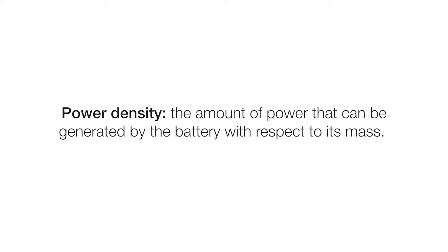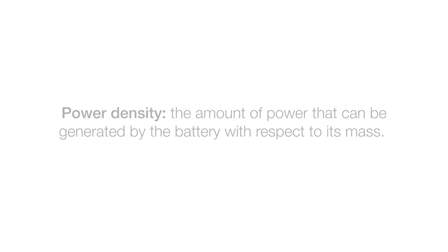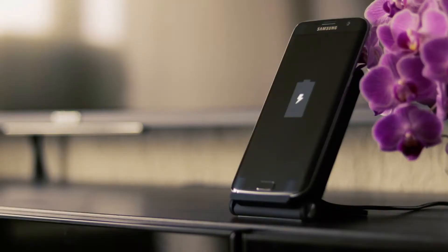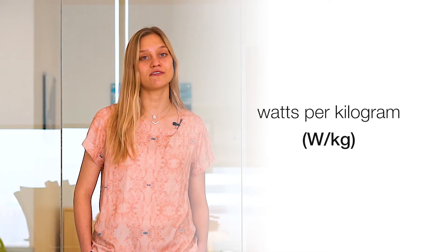Power density, on the other hand, is the amount of power that can be generated by the battery with respect to its mass. In this instance, we're referring to the speed, or rather the battery's ability to absorb and deliver power. So going back to the cell phone example, a battery with high power density will charge faster than one with a lower power density. Power density is measured in watts per kilogram, so the unit of measure is very similar, but definitely not the same.